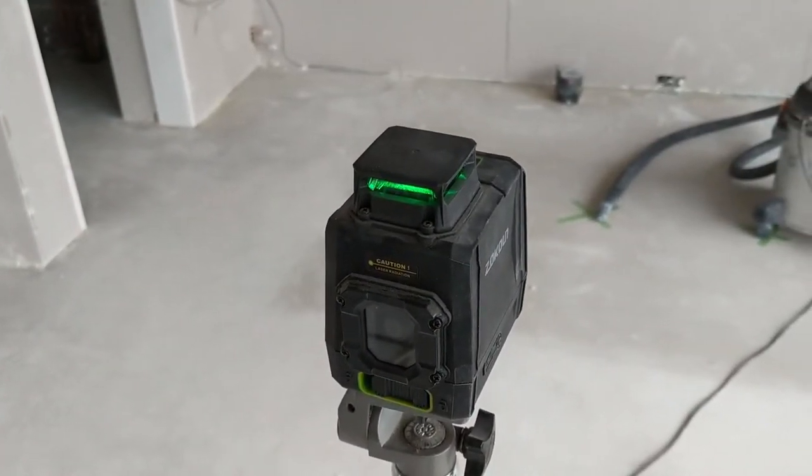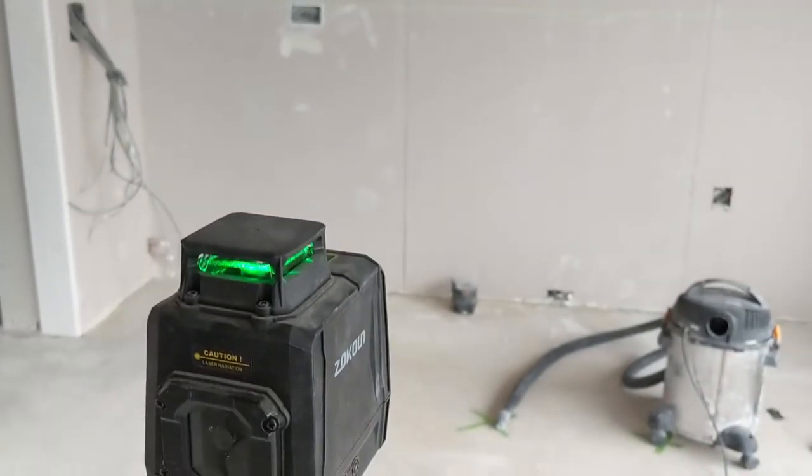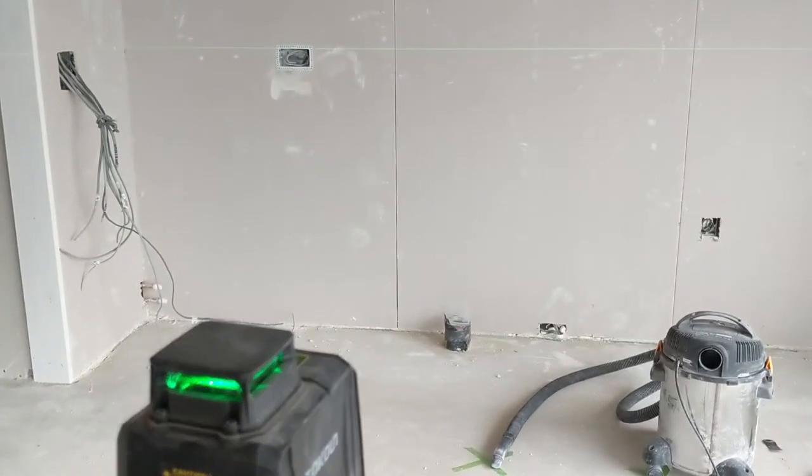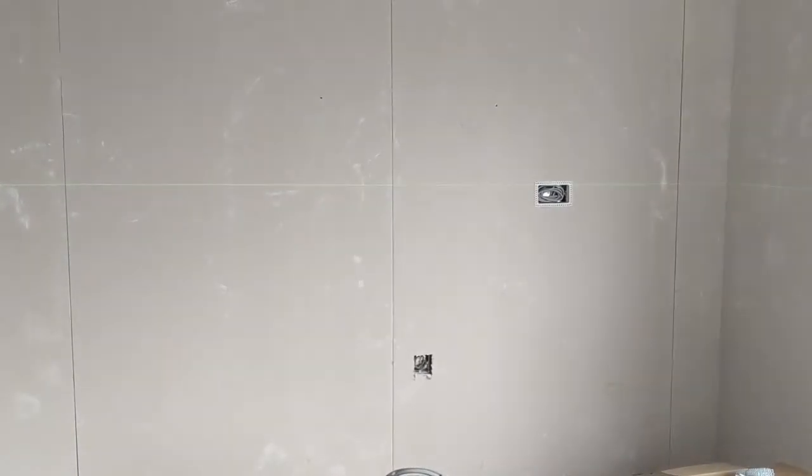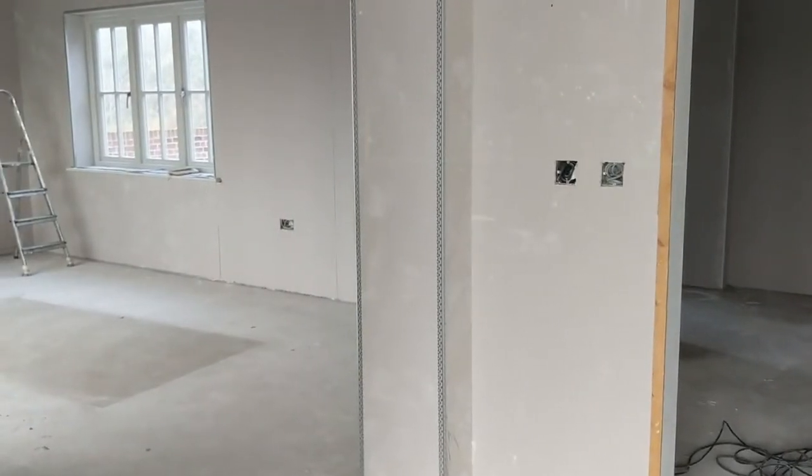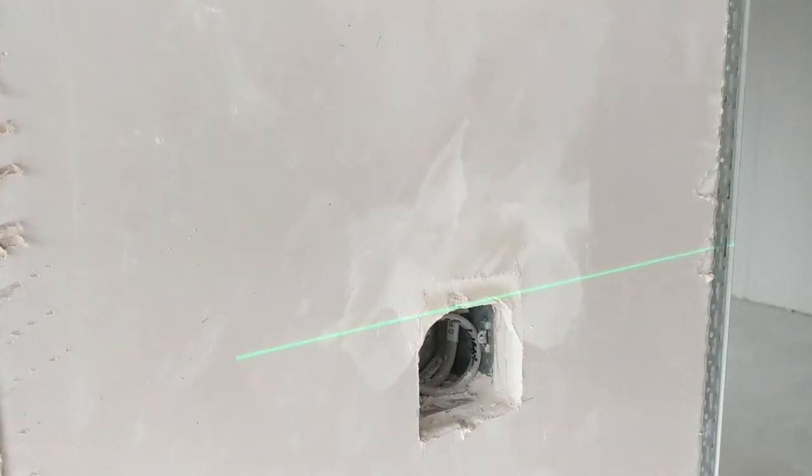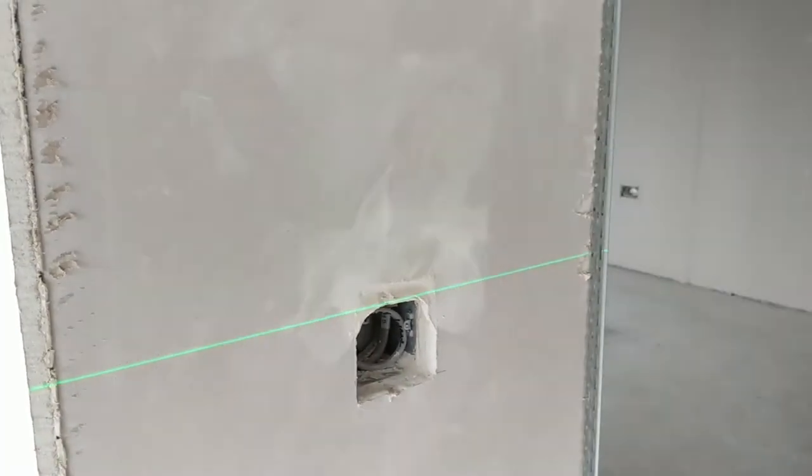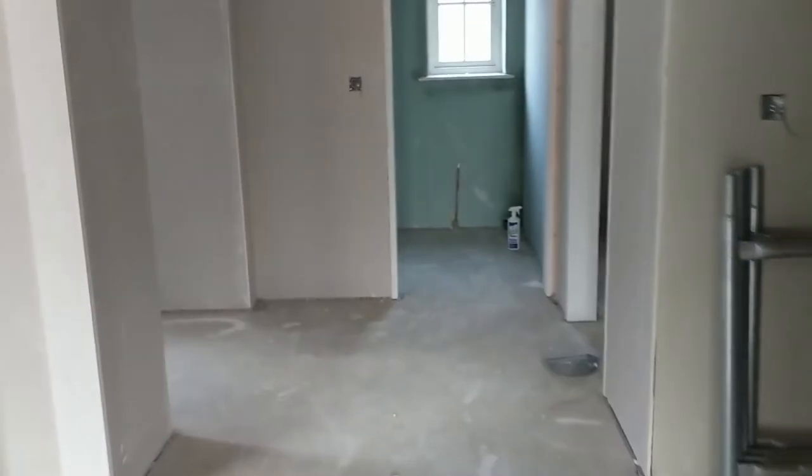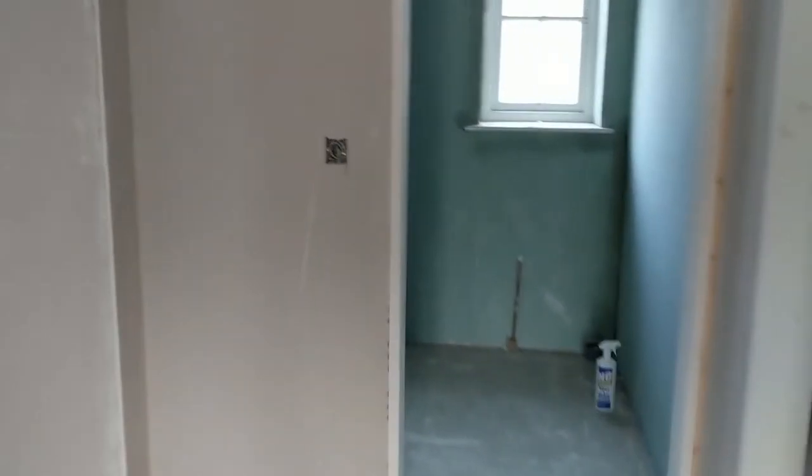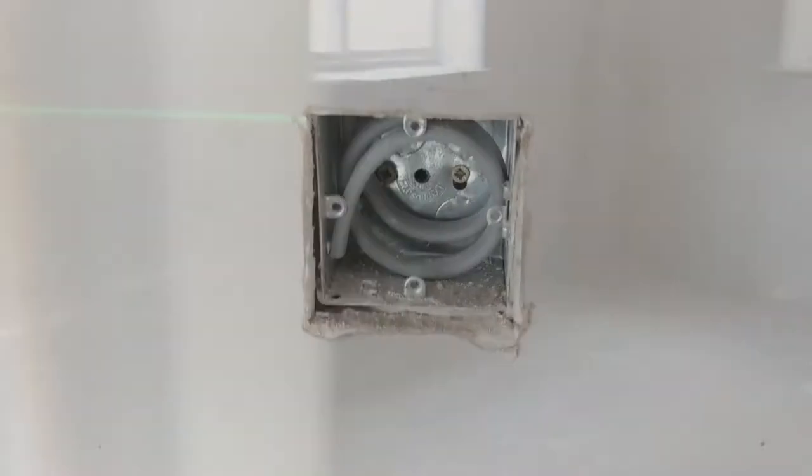So the great thing about this laser level is that it is 360 degrees, which my other one didn't do. Again, there are links below to where you can get these. You can see that it's really just picking up the top of all of those boxes around the room, every single one of them. This one needs to be just filled in just a little bit. That's still going off. But check this out. It's even managed to, wherever you've got a line of sight, get it all the way out here.